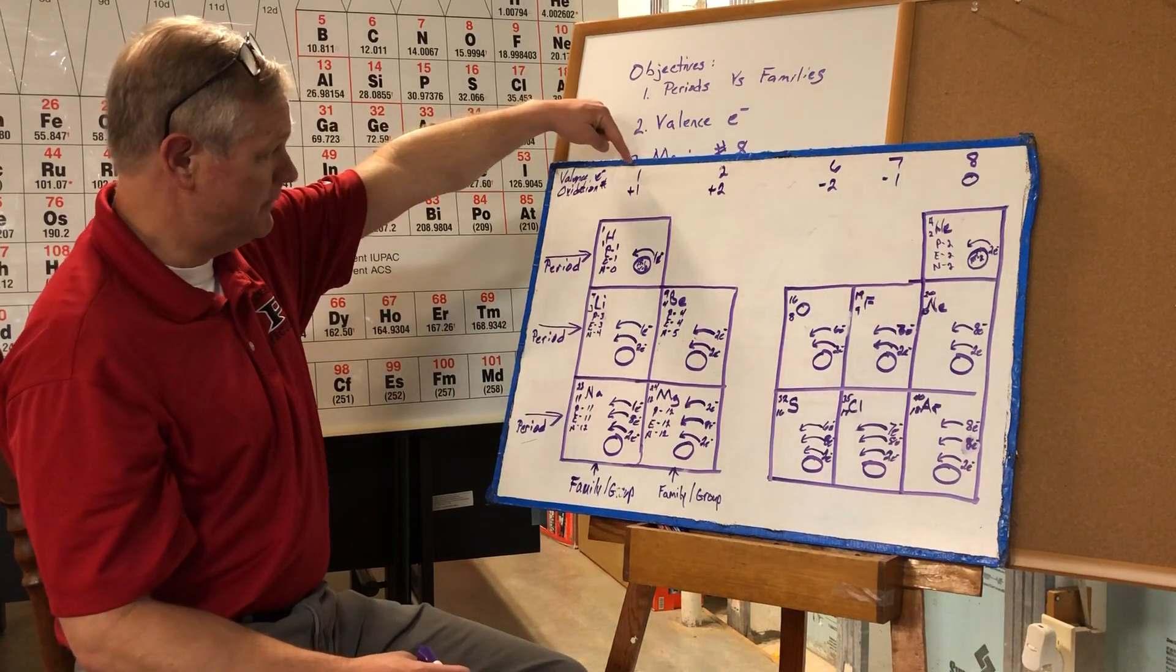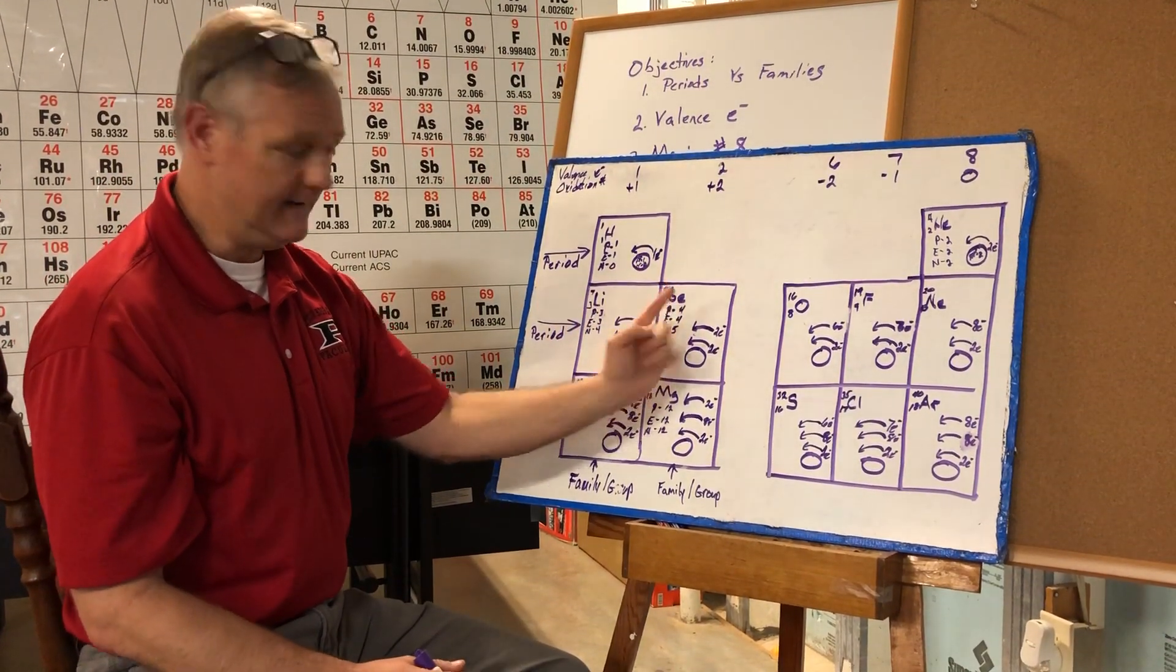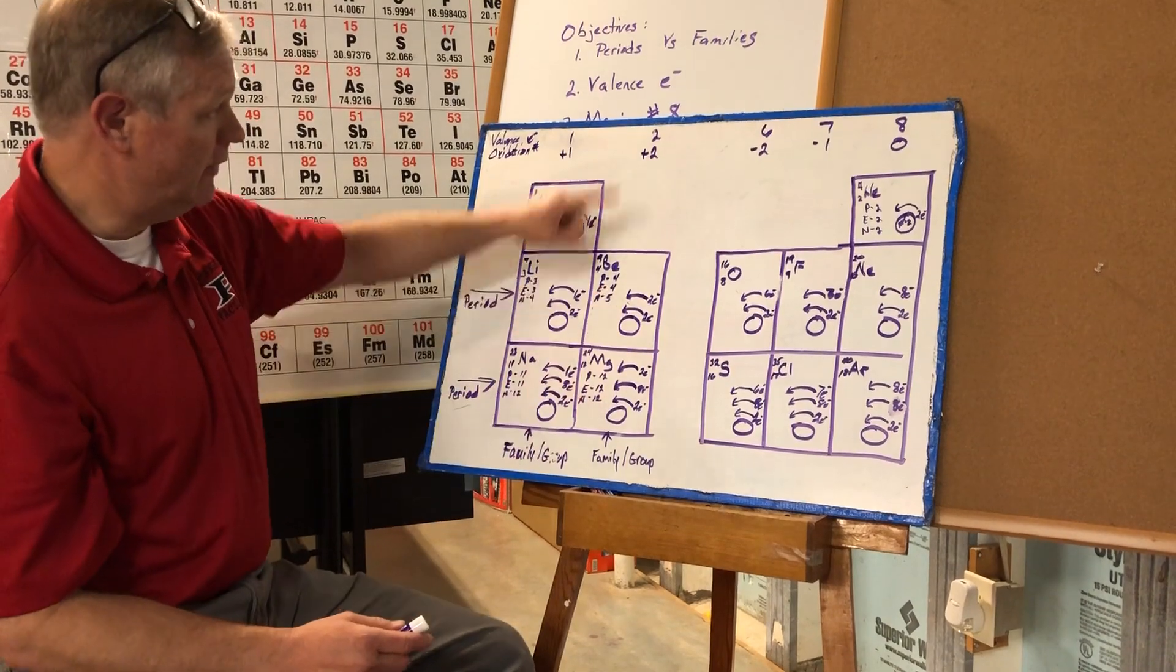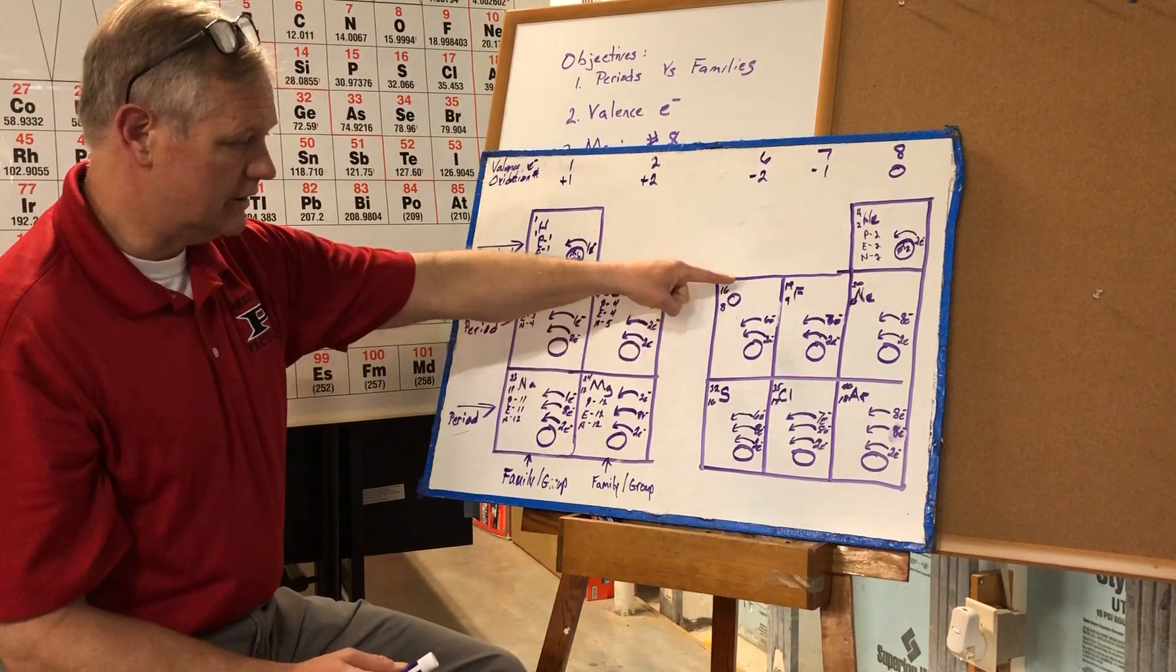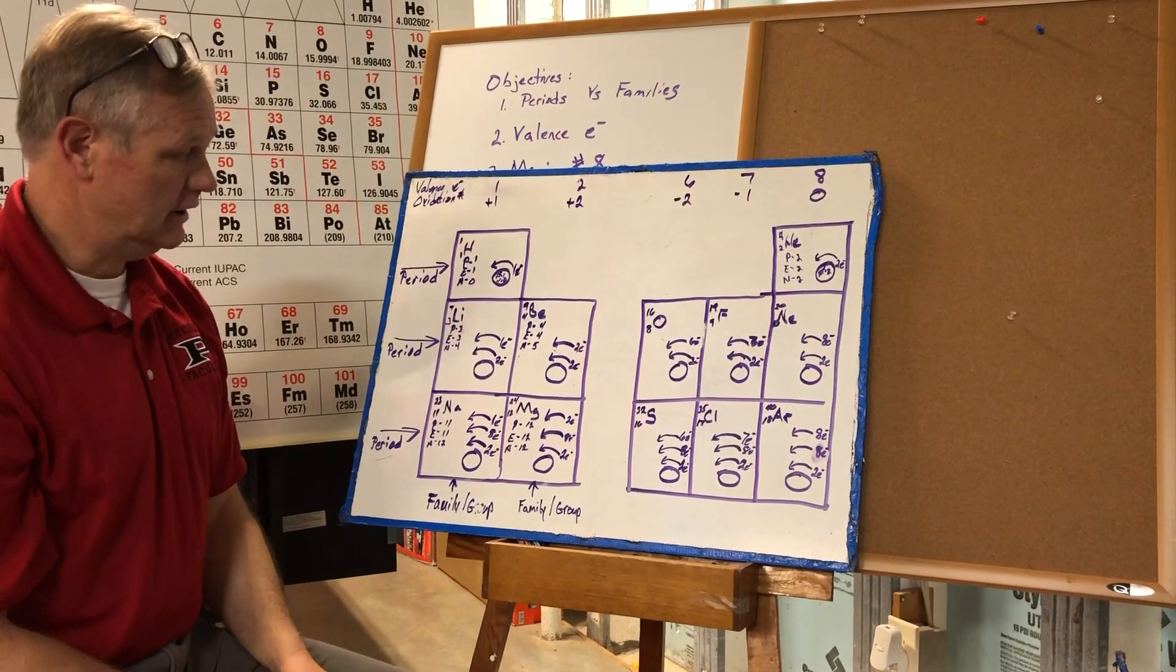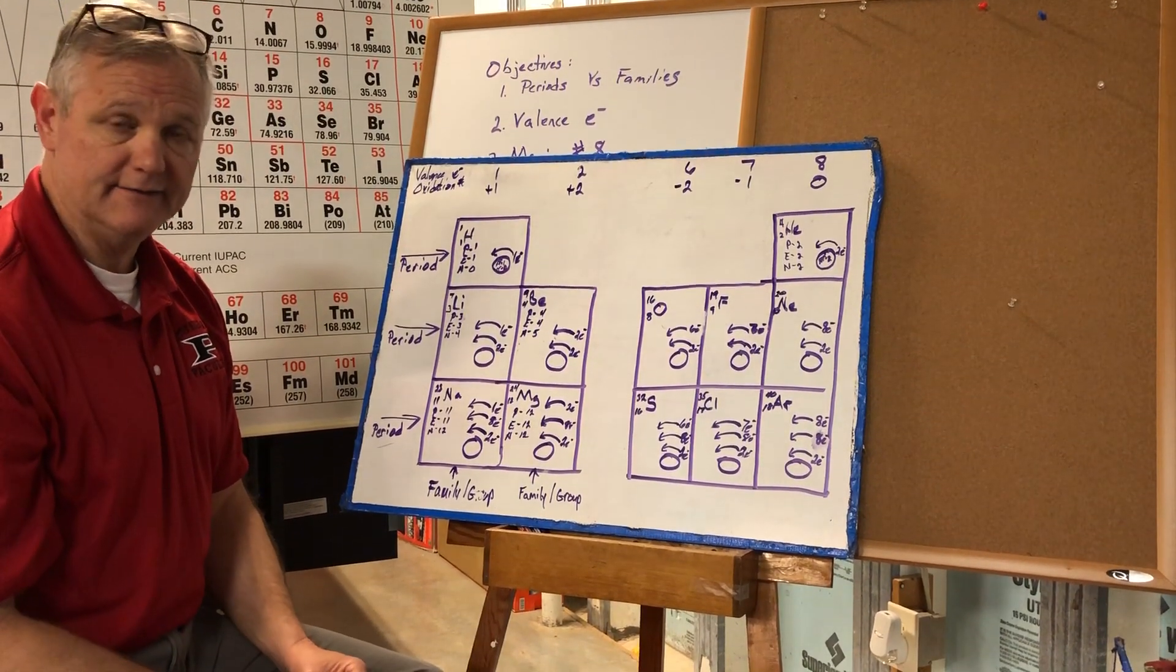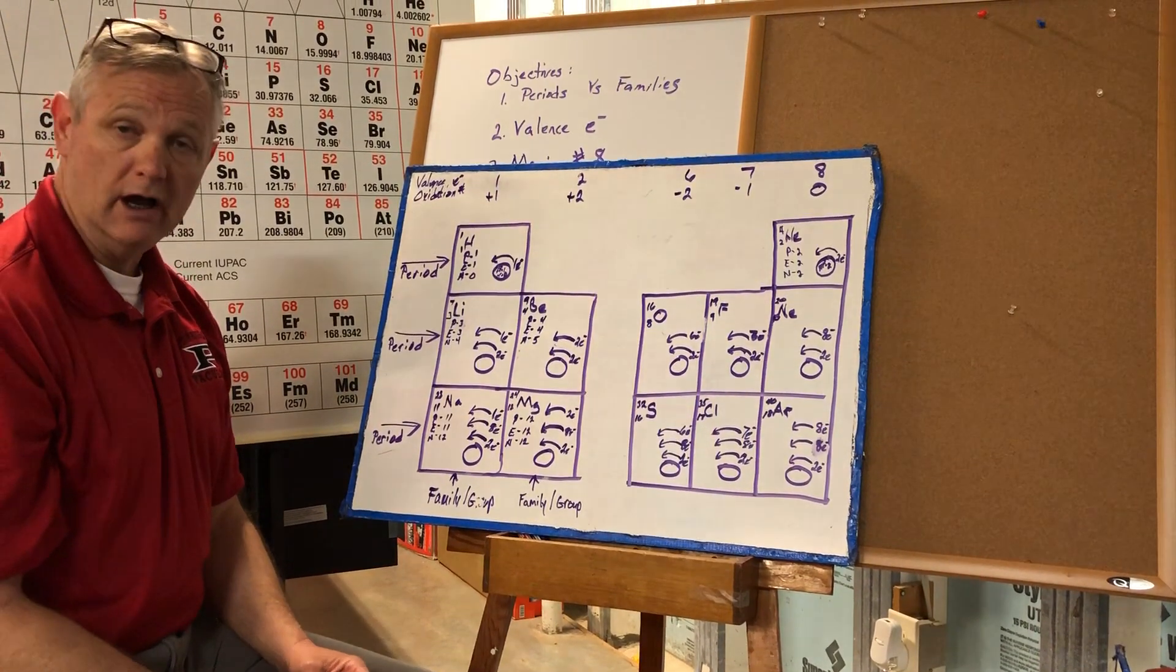So when I look back up here, we have one valence electron. If I come over to the second family, the beryllium, the magnesium, and then if I kept going with the calcium, etc., I would get two valence electrons. Now I'm going to skip all the way over to oxygen and sulfur. I get six valence electrons, and then I get seven valence electrons for fluorine and chlorine, and finally I get eight valence electrons for the neon and argon, which are the noble gases.